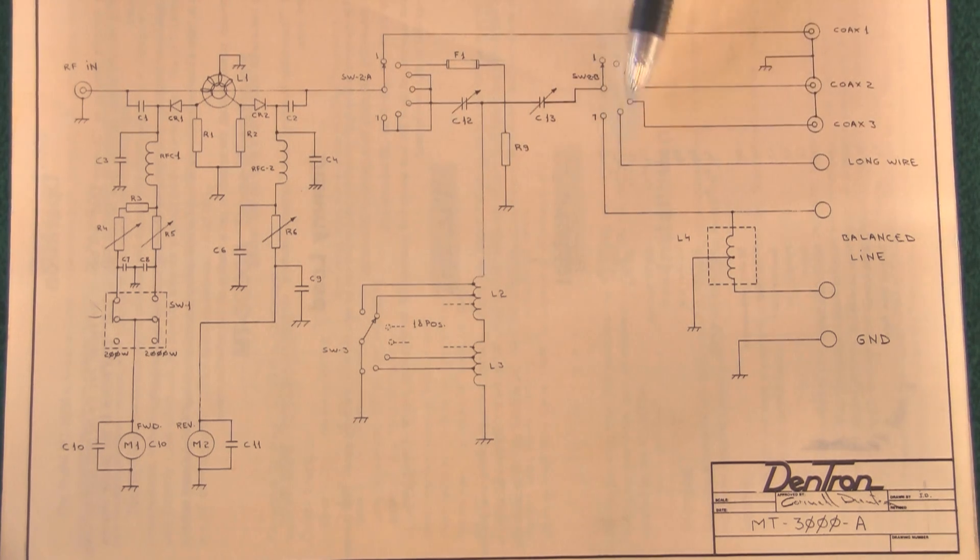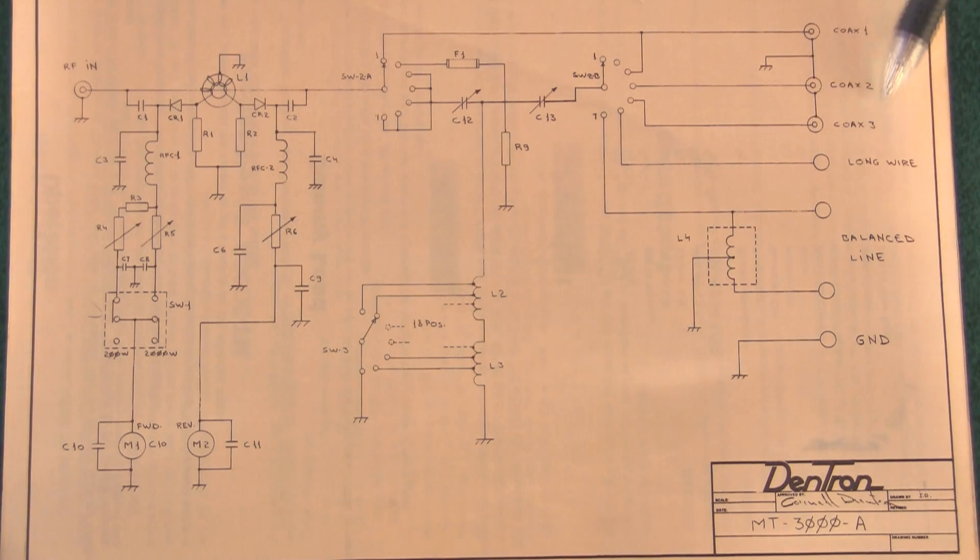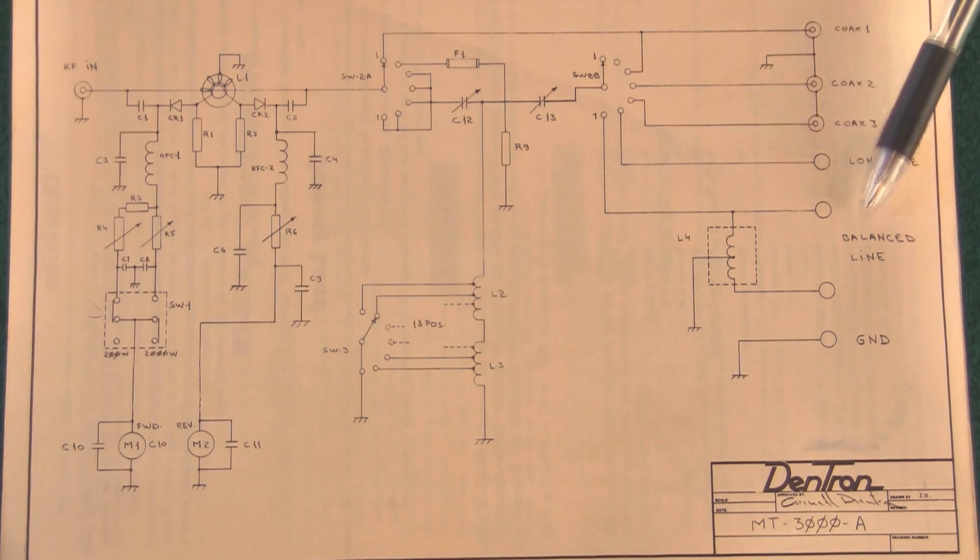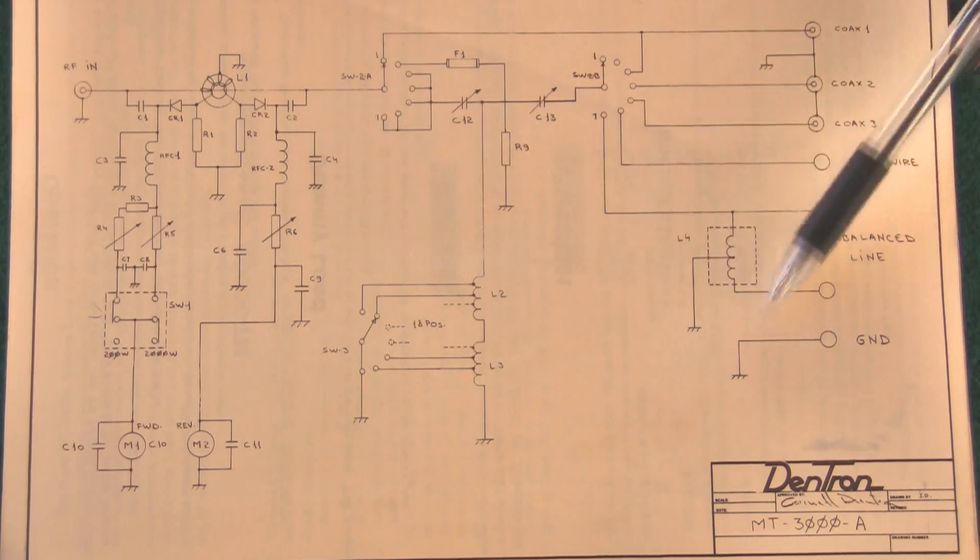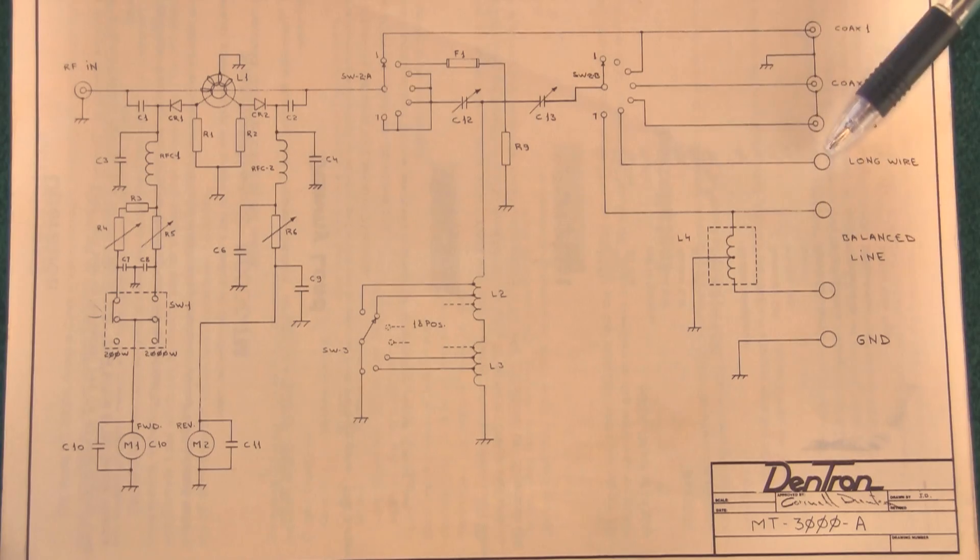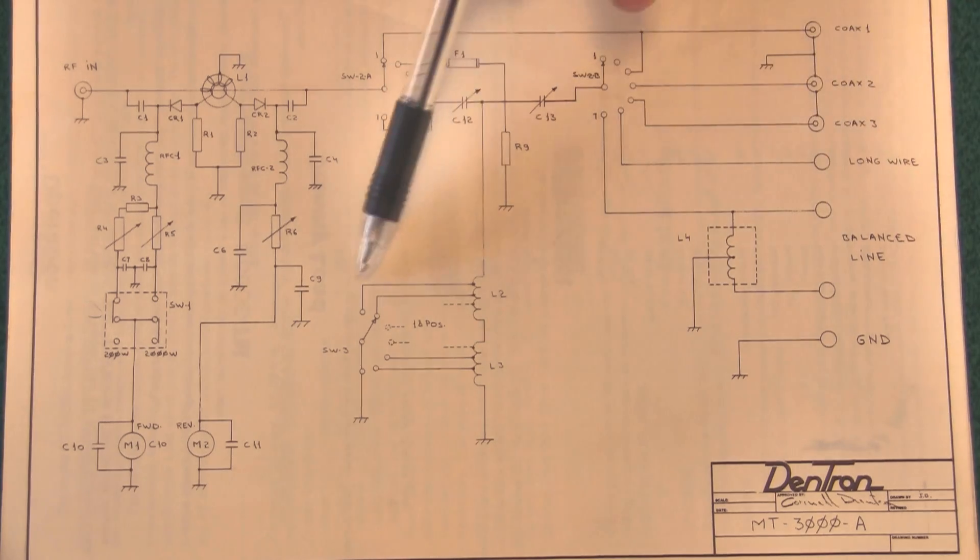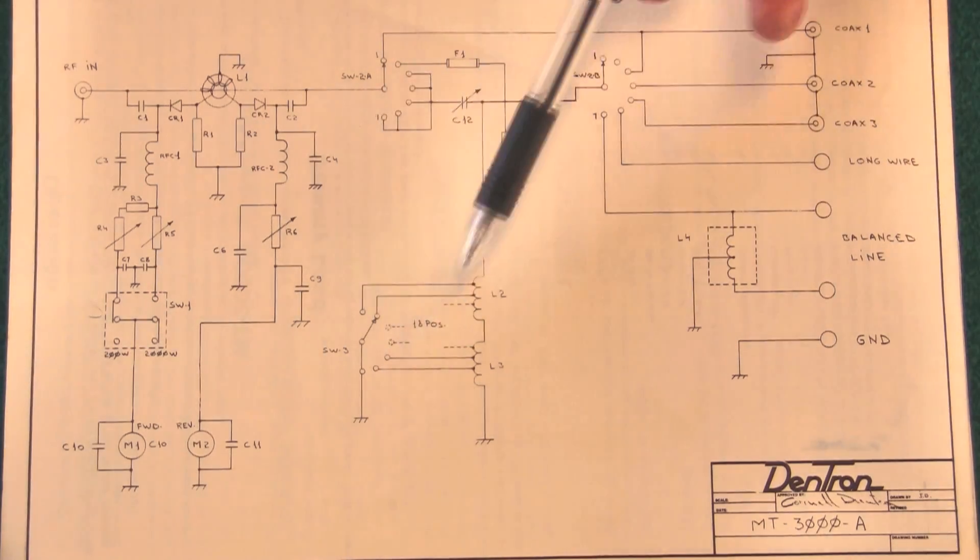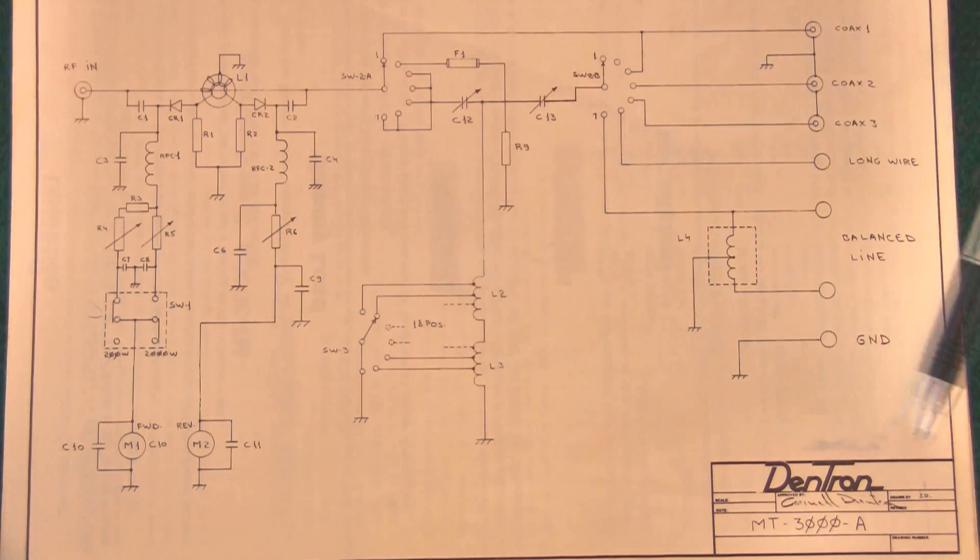And here's the switch to switch the output to the various coaxes. Three coax connectors, a long wire, a balanced line. Here's a ground connection. Here's the internal balun to make this a balanced line feed as well as a single line feed. Of course, down here is a section of the switch. The switch is the inductor. This is the Dentron MT-3000A.